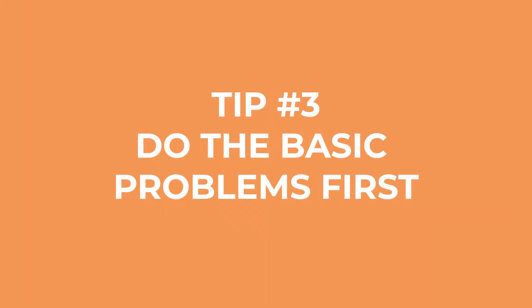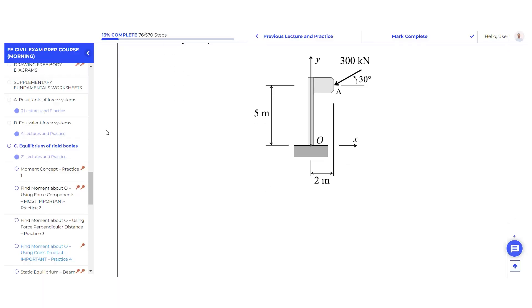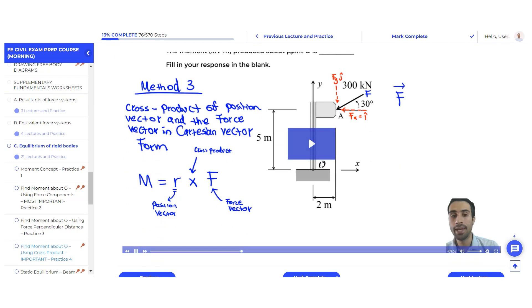Tip number three: practice lots of problems, but make sure you do the basic ones first. You don't want to do the hard ones too early. You want to gradually build your problem solving skills by doing the basic problems first. If you're encountering problems with excessive or overly long solutions, skip them — because the FE exam tests the fundamentals, and questions are probably two to three steps maximum. Focus on the basics, and after you're comfortable, challenge yourself with the harder problems.